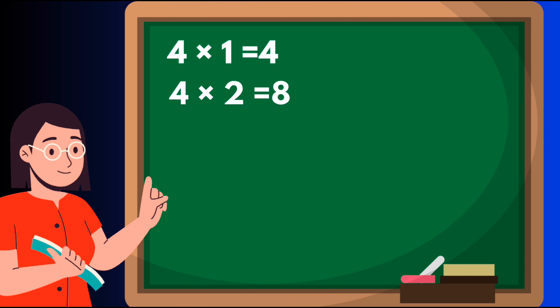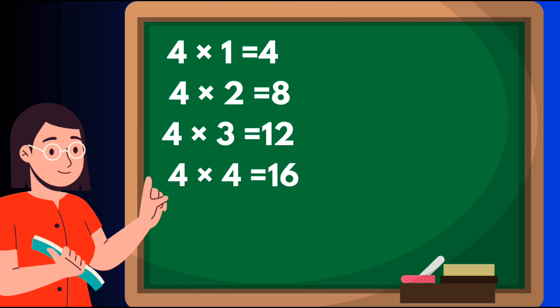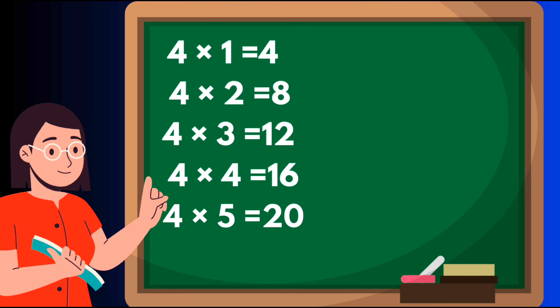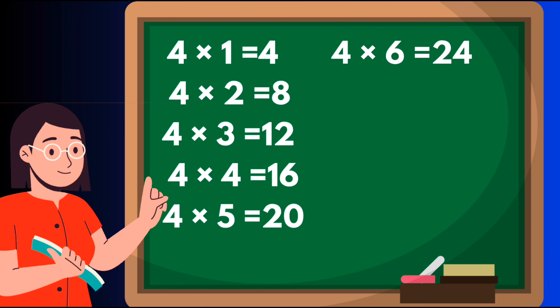Four twos are eight, four threes are twelve, four fours are sixteen, four fives are twenty, four sixes are twenty-four, four sevens are twenty-eight.